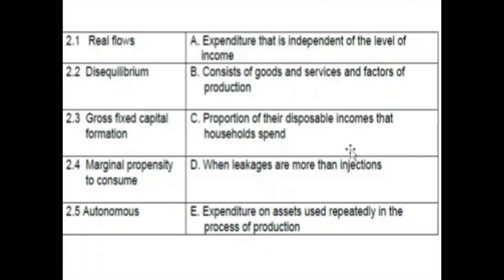Number 2.1: a real flow consists of goods and services and factors of production — the real stuff we can touch and feel. Equilibrium is when leakages and injections are equal. A disequilibrium is the opposite — when leakages and injections are not equal. Number 2.2 answer is D: when leakages are more than injections.